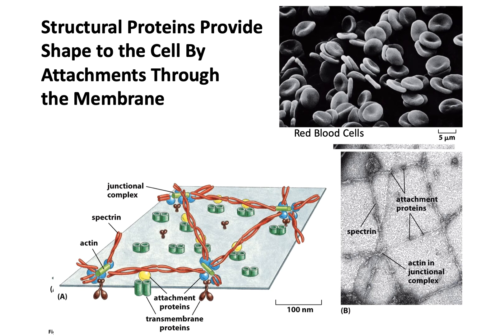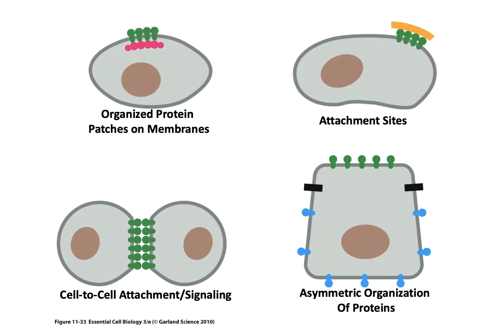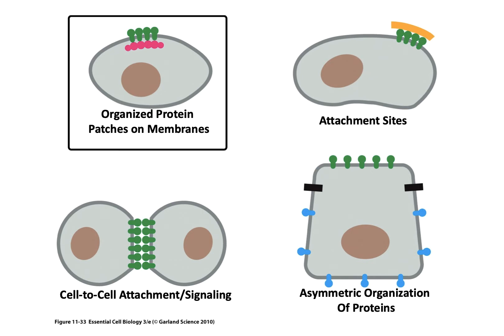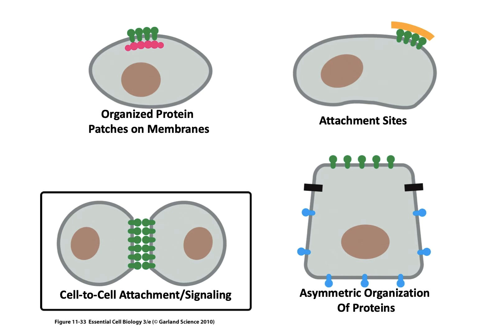Another set of membrane proteins are structural elements — cytoskeletal elements. In animal cells these consist of proteins embedded in the membrane as well as proteins that connect those elements together to make a structure of the cell, allowing it to change shape and move. Some of the main functions of these cytoskeletal elements are to organize patches of proteins on the membrane for special purposes, provide attachment sites to external media or to other cells, and enable cell-to-cell attachment and signaling.